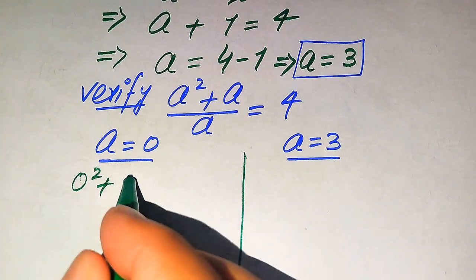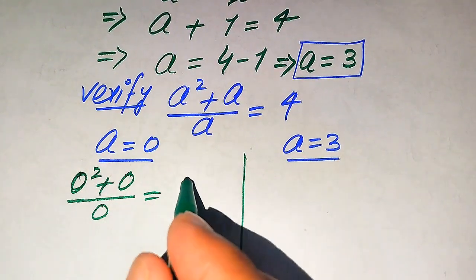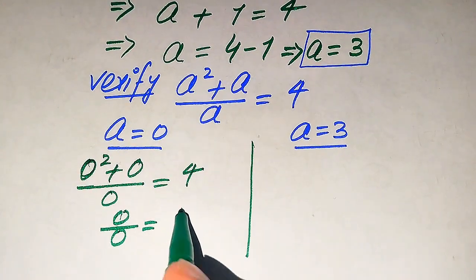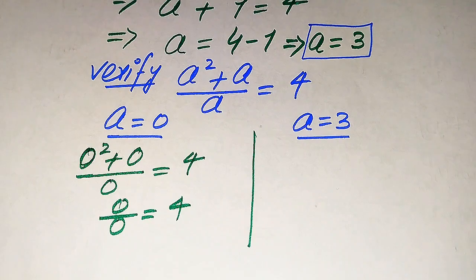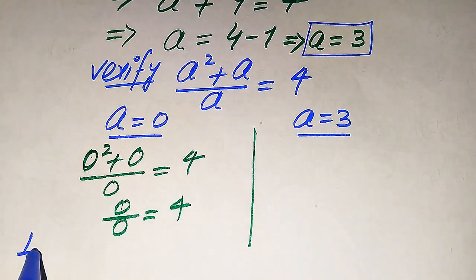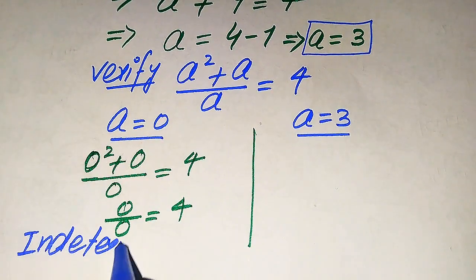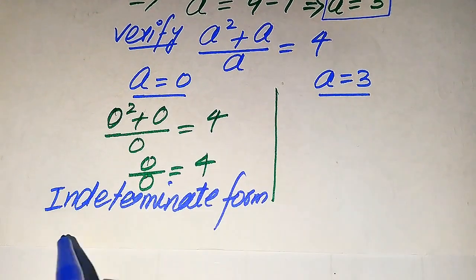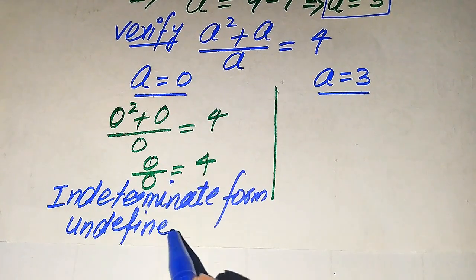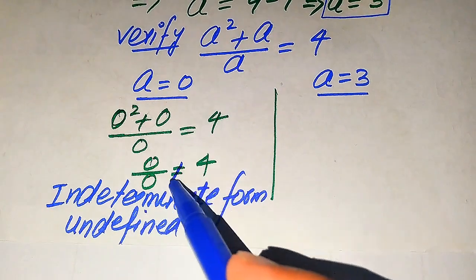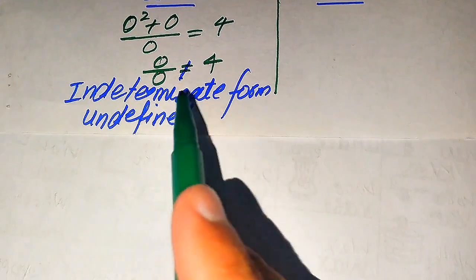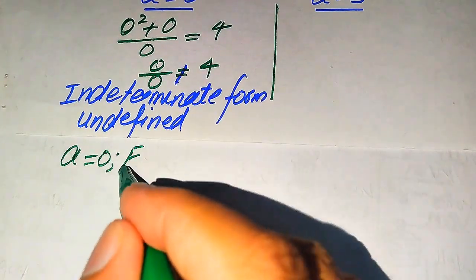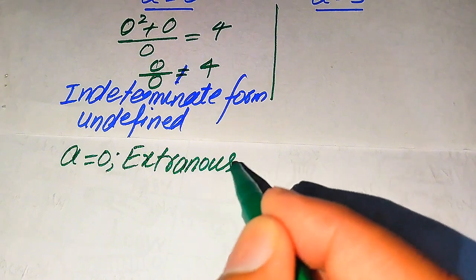First we verify a equals 0. Substituting into the left hand side: zero squared plus zero, divided by zero equals 4. Zero squared is zero, zero plus zero is zero, so we get zero divided by zero equals 4. Zero divided by zero is an indeterminate or undefined form. Since the left hand side is undefined, both sides are not equal, so a equals 0 is not a solution.